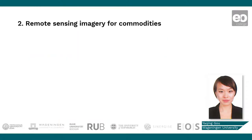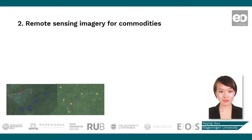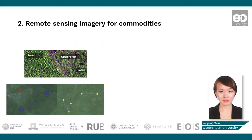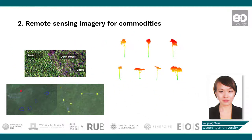This brings us to the next topic: what information can remote sensing imagery provide for commodity mapping? The answer to this question depends on the type of sensor on board. In the following slides, I will be listing key advantages and disadvantages of optical, radar, lidar, and drone-based approaches, starting with optical data.